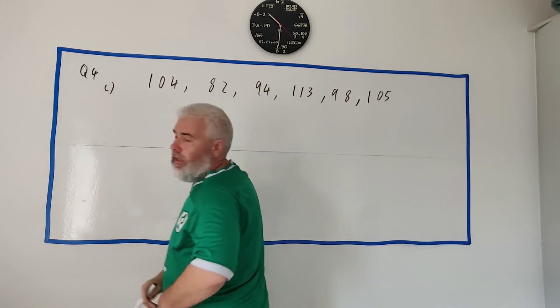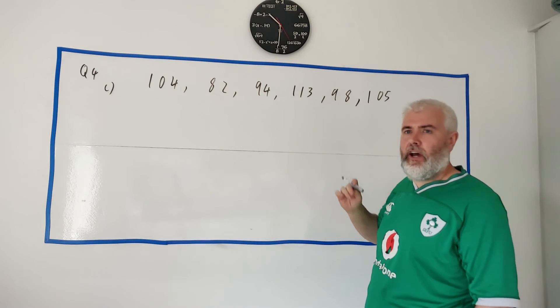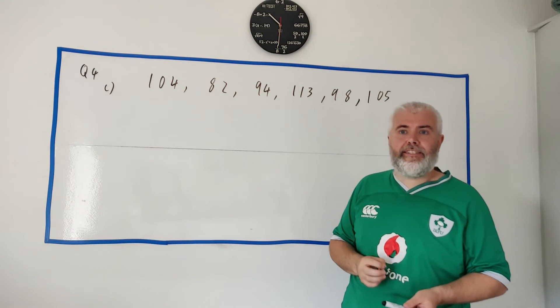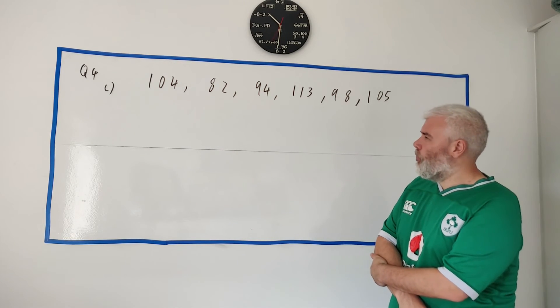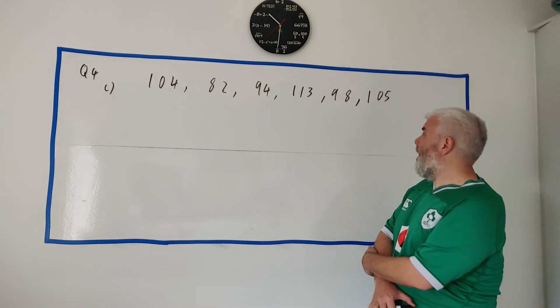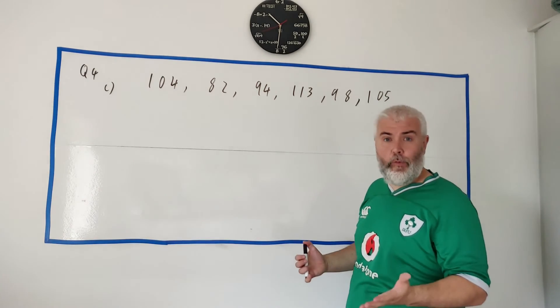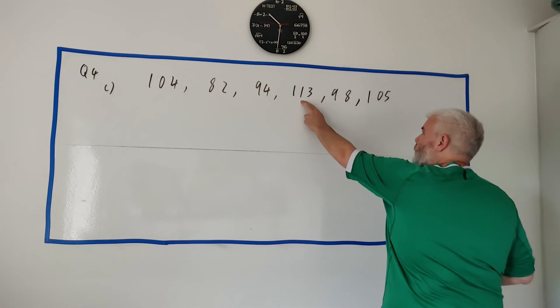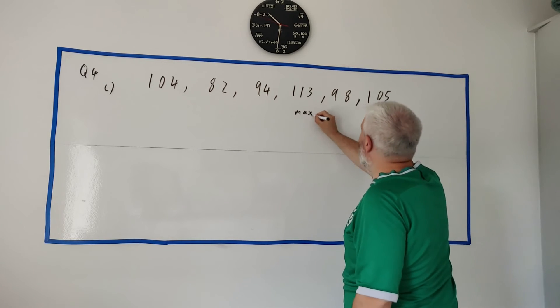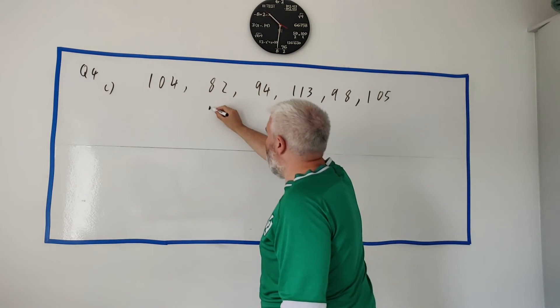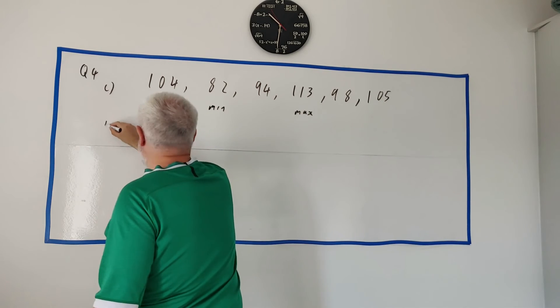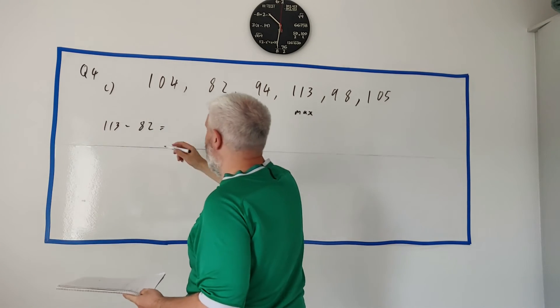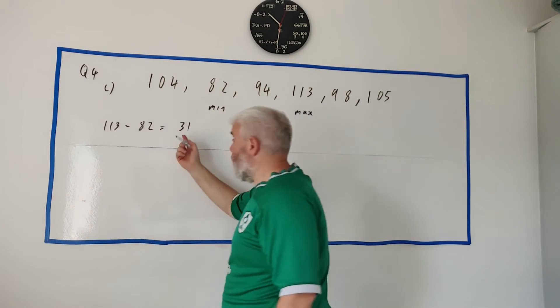Part C of this question gives you these six numbers. So one, two, three, six numbers. And they ask us to find the range and the standard deviation of these numbers. So the range, what you're looking for is the largest number and the smallest number and take them away. So you can just put them in order. Or we can just look through what's the biggest number. It would be 113, like max. And the smallest number would be 82, minimum. So we just take them away. 113 minus 82 is equal to 31. That's what I get. And that's the range.